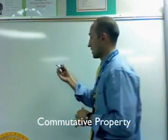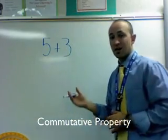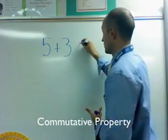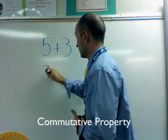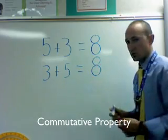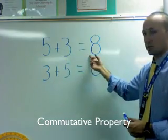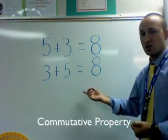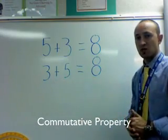Let's look at an example of the commutative property. If we have five plus three, we can switch the places of the numbers and still get the same answer — five plus three is eight. The commutative form would be to write three plus five, and we still get eight. So the commutative property for addition means switching the places of the numbers and still coming up with the same answer.